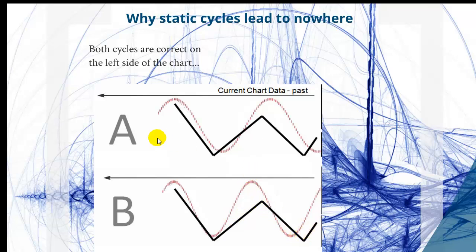In the first example A, the red one would be a detected static cycle on the left side of the chart. If we do our validation, we see this top is aligned with this top, this low is aligned to this low, this top projection is the top in the price, and the low in the price is quite close to this projected low. So we would conclude this detected cycle would be valid for projection.